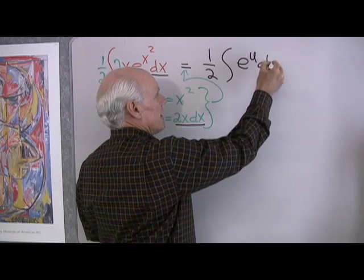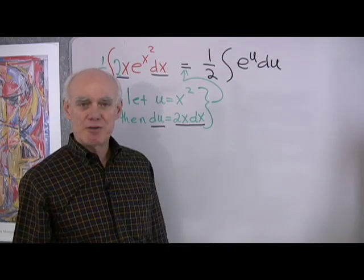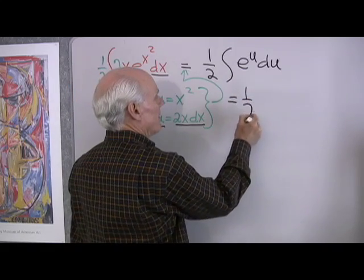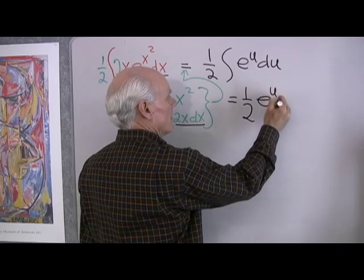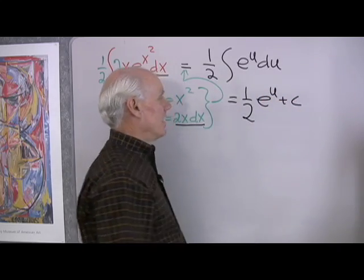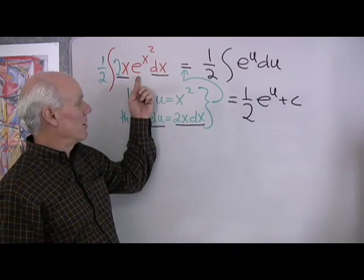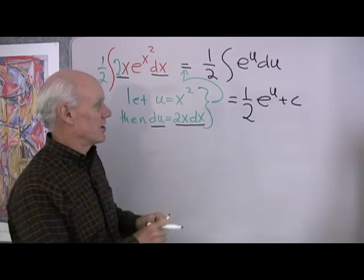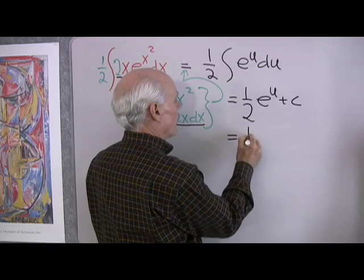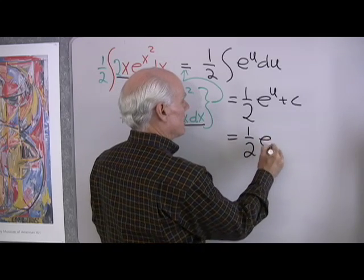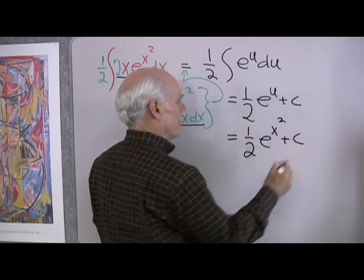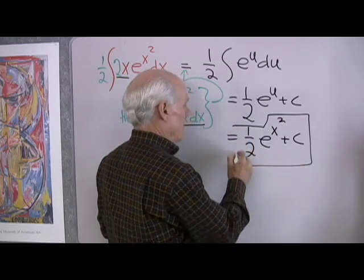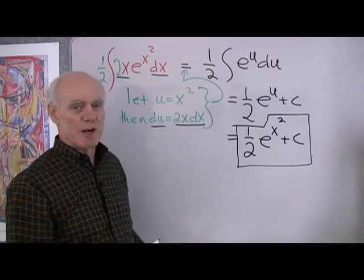So it's all set up as a nice simple integral, and I know how to integrate e to the u, that's simple. This becomes 1 half the integral of e to the u is e to the u plus c, and then since my original problem is in terms of x, I'm going to rewrite my answer in terms of x by letting u be equal to x squared. So I end up with 1 half e to the x squared plus c. That's the answer to this problem, the anti-derivative of this expression.